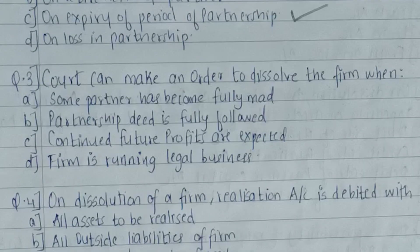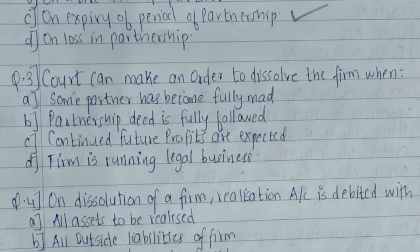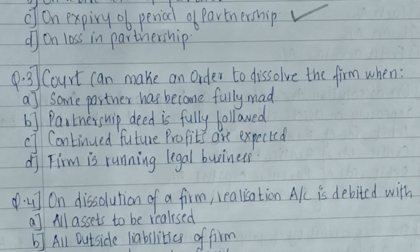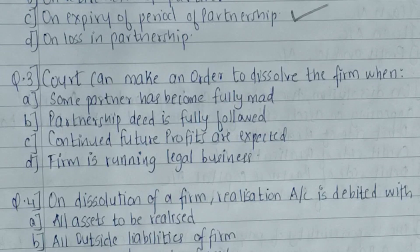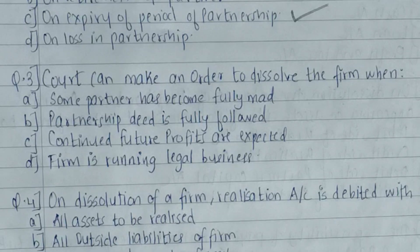Third question: the court can make an order to dissolve the firm when — some partner has become of unsound mind, the partnership deed is fully followed, continued future profits are expected, or the firm is running a legal business. Options B, C, and D are positive conditions where dissolution is not warranted. The court can intervene when a partner is incapable of performing duties — that is, has become of unsound mind. So the right answer is the first option.